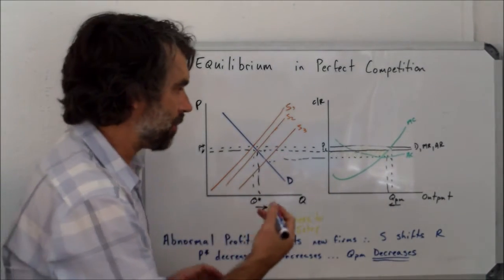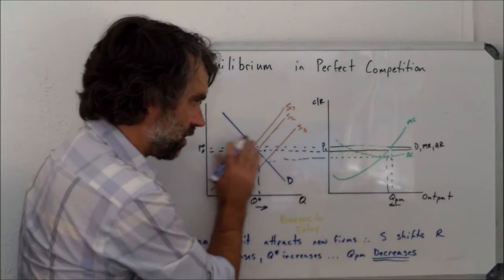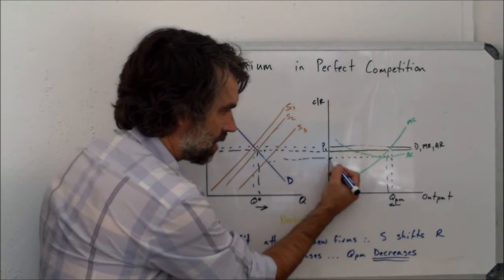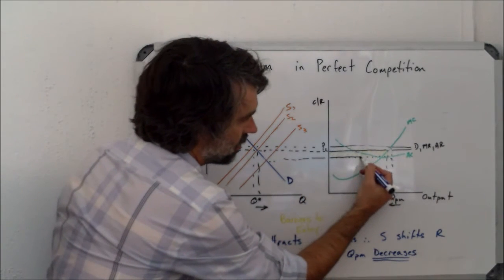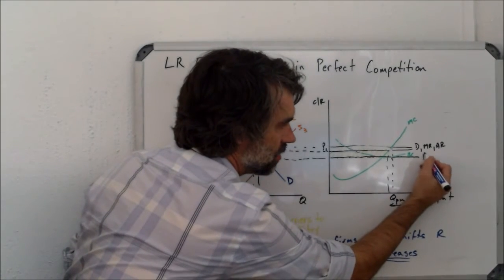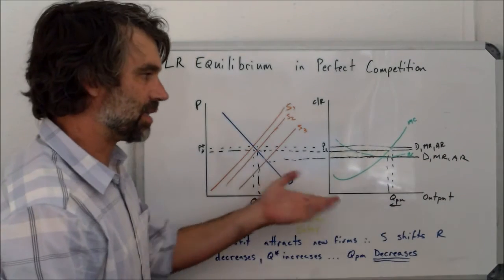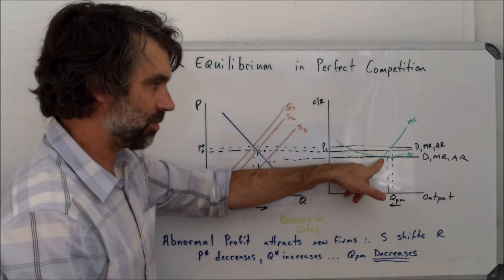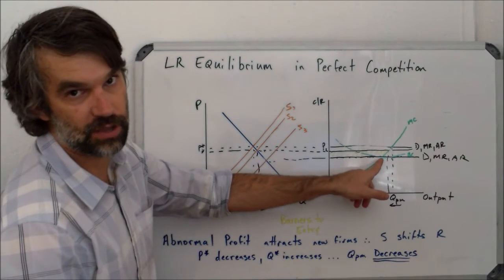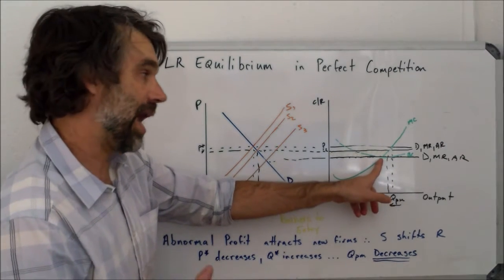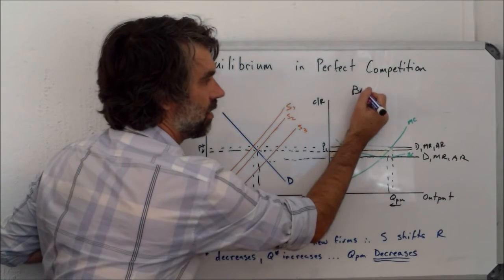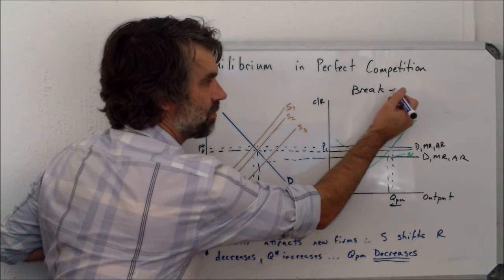So this will continue to happen until the industry has shifted far enough to the right that the price is found right at that position. So this is going to be our new, and we can see that at this position, the point of profit maximization here is equal to the lowest point of average cost. So at this point, average revenue and average cost are equal to each other, and they end up in what we call the break-even position.